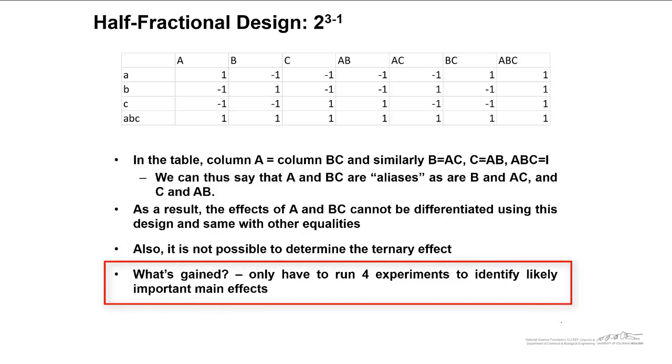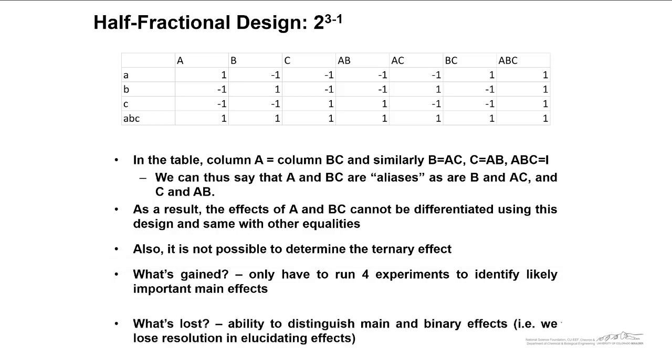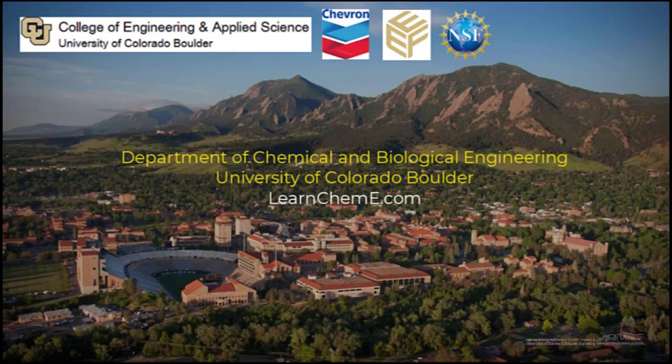So if these experiments are very expensive, maybe you're having to test something for weeks just to get one replicate, then a half fractional design might be a good idea. What's lost? The ability to distinguish main and binary effects is lost. In other words, we lose resolution in elucidating the effects. So there's kind of a trade-off. Less money, less time, but you're not able to distinguish between the main and binary effects quite as much. There was a trade-off.